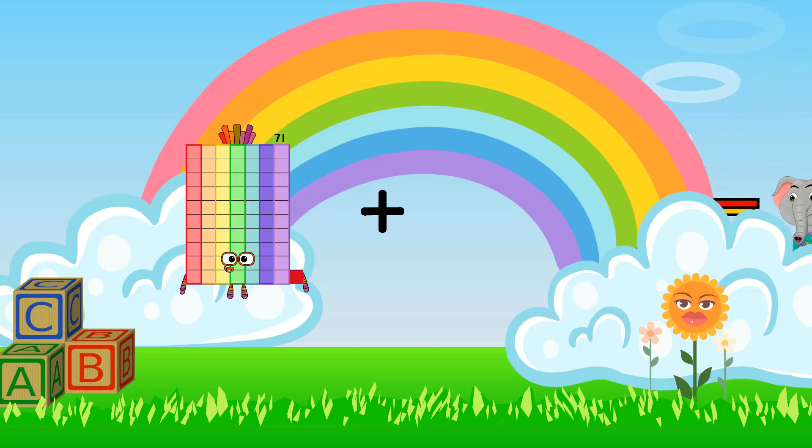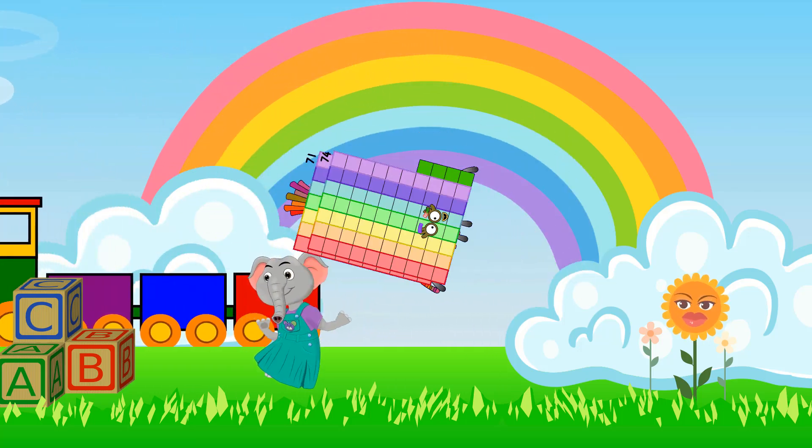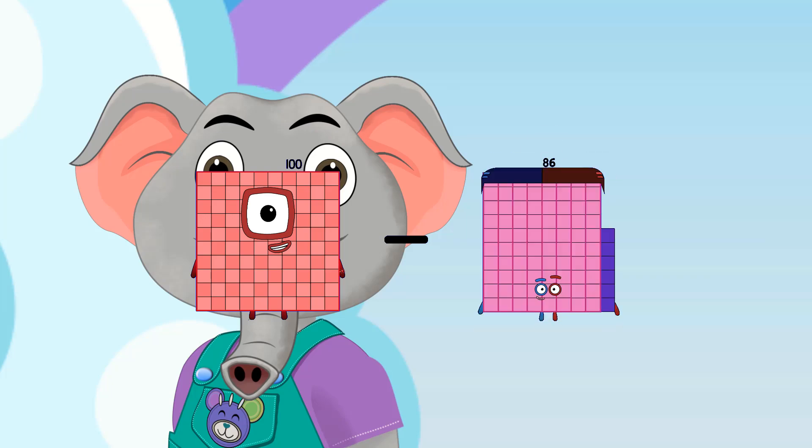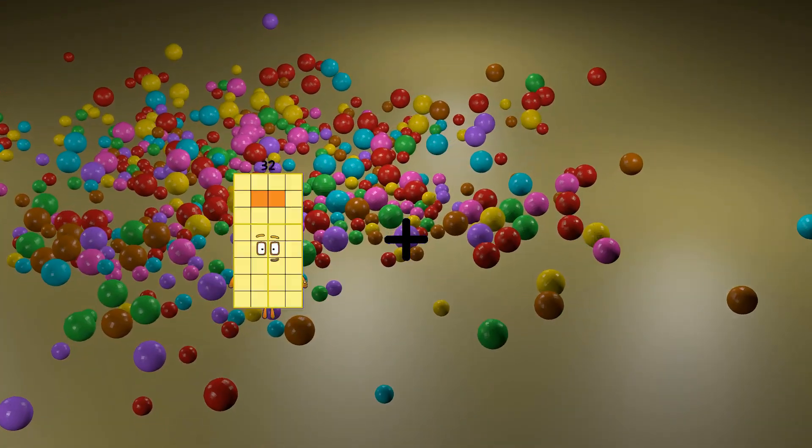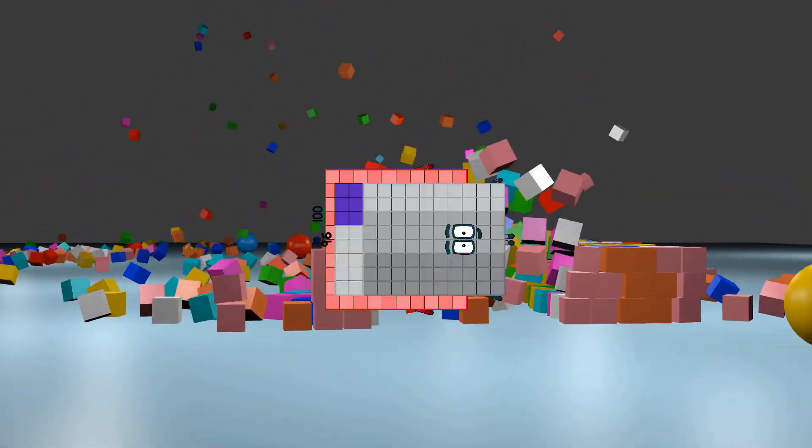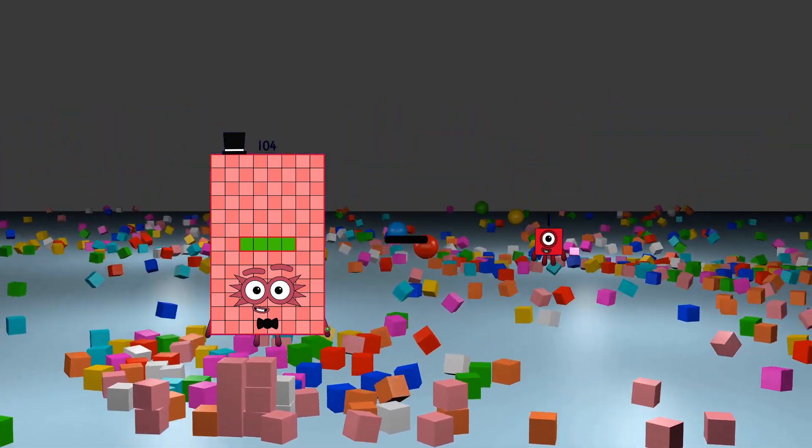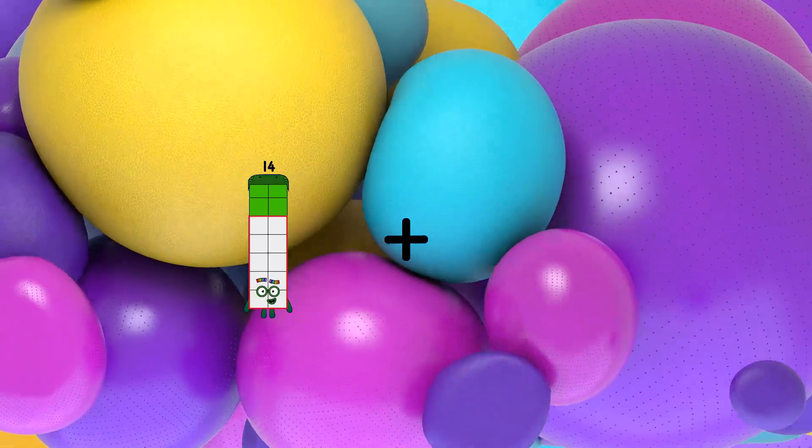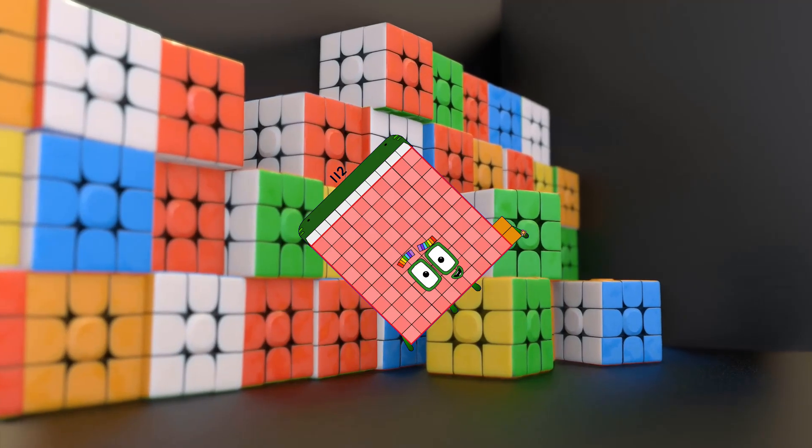71 plus 74 equals 145. 100 minus 11 equals 89. 100 plus 96 equals 196. 104 minus 34 equals 17. 103 plus 9 equals 112.